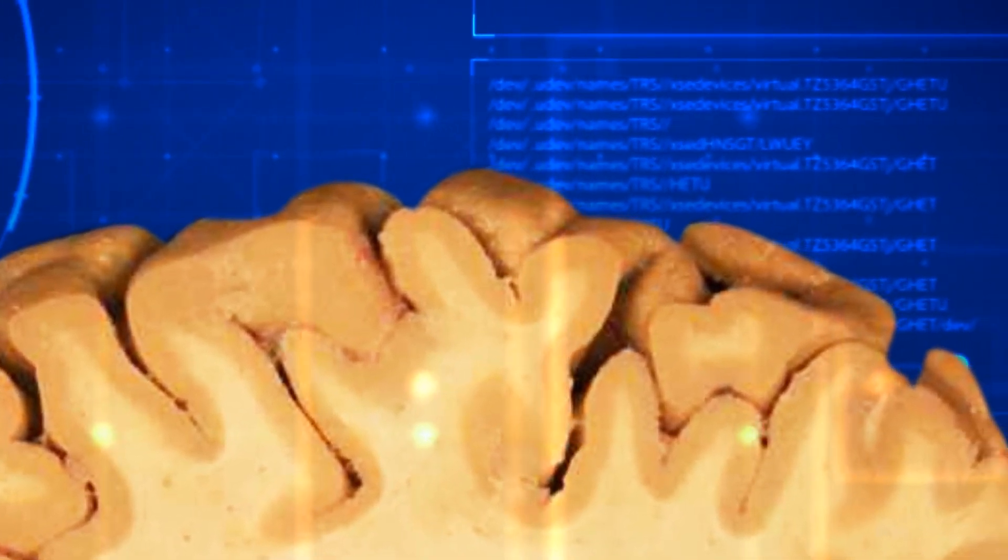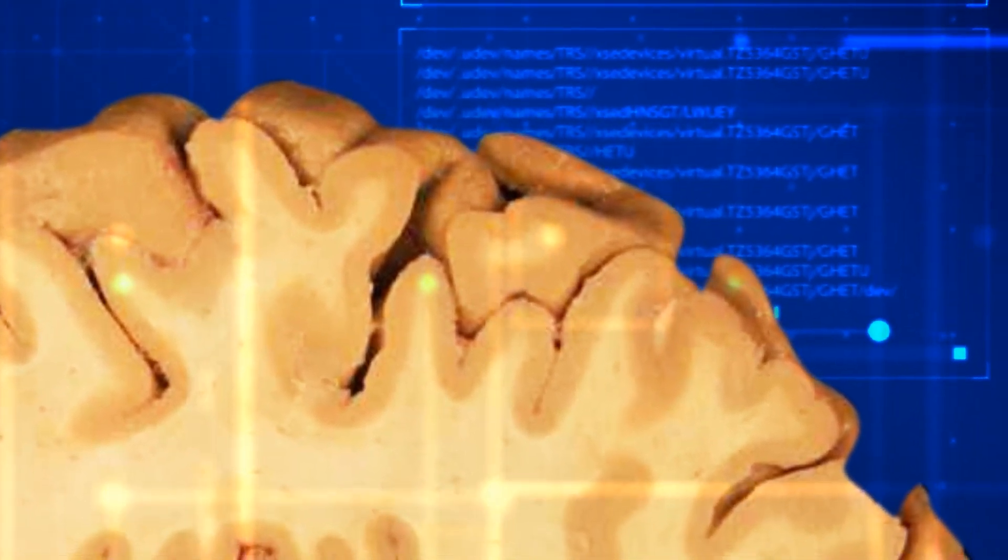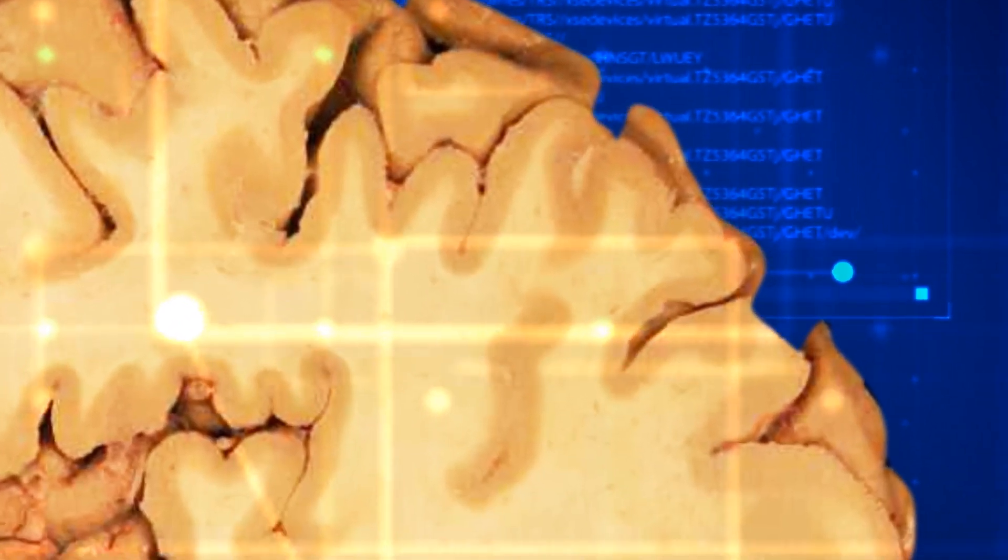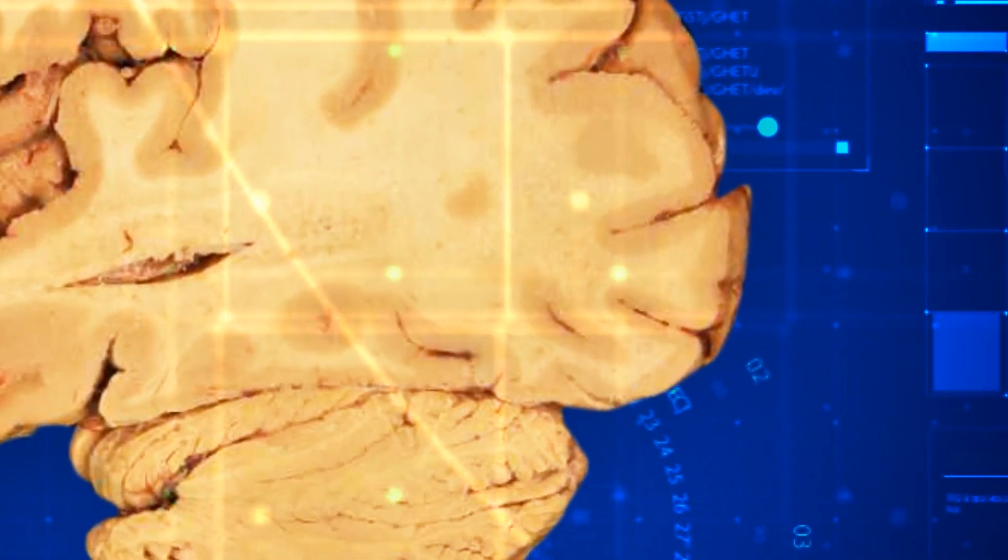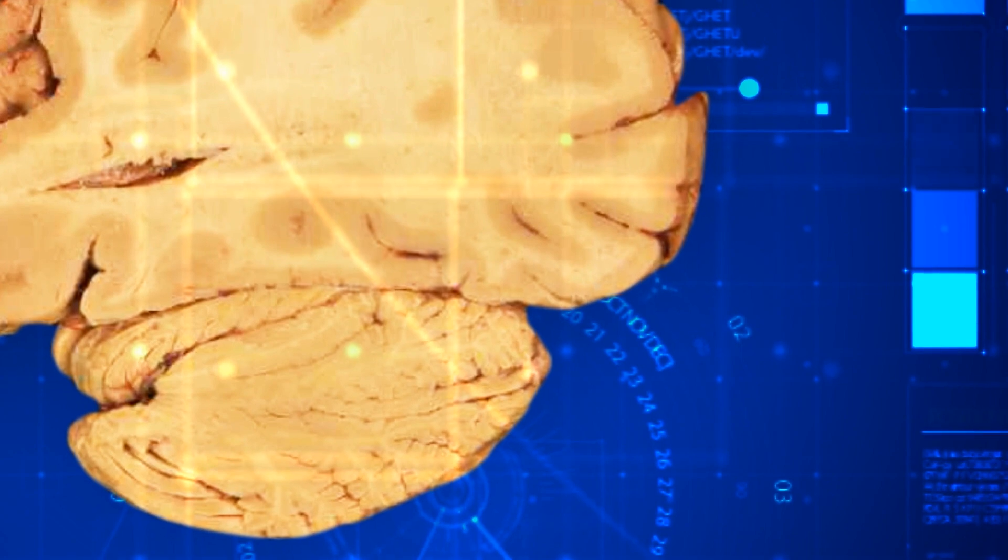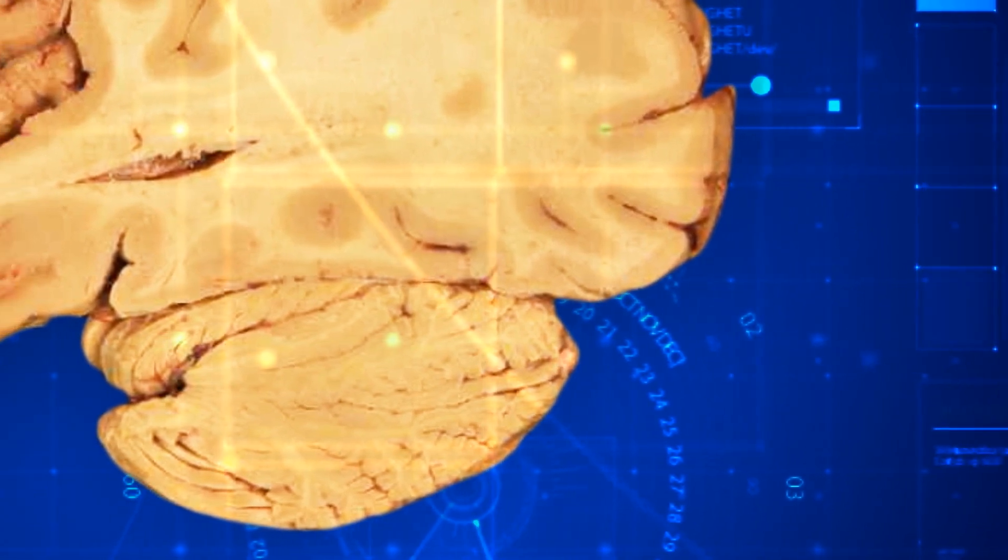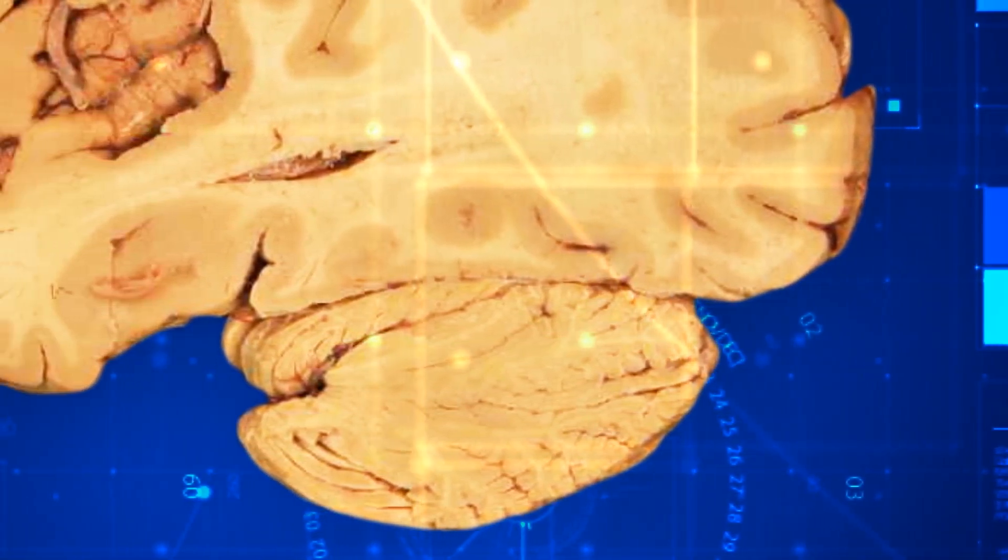Less than a quarter inch thick, the cortex is the brain's crowning glory. Among its roles, the cortex is our reality check. It filters and orders the outside world for us and allows us to see, touch, hear, and speak.